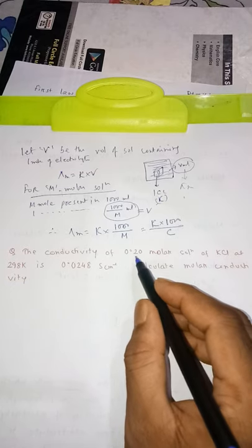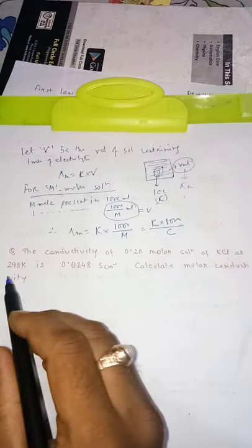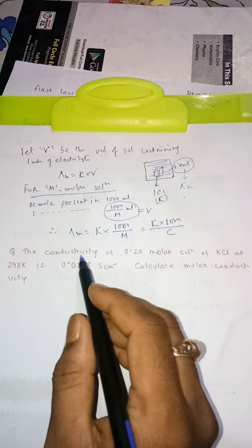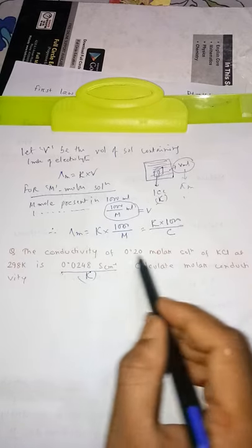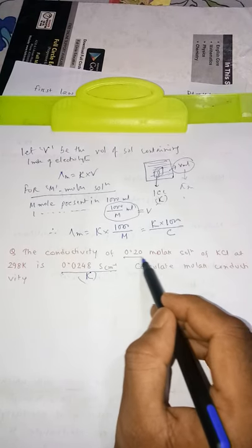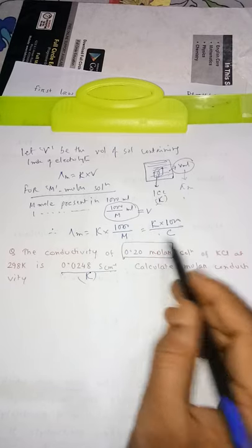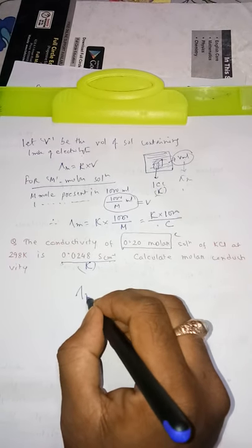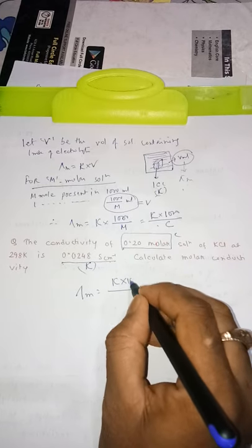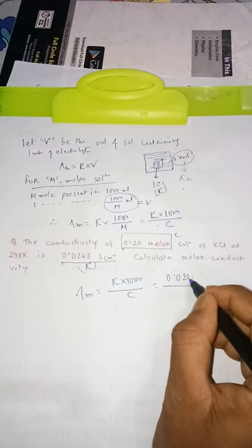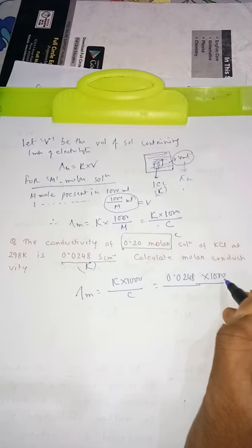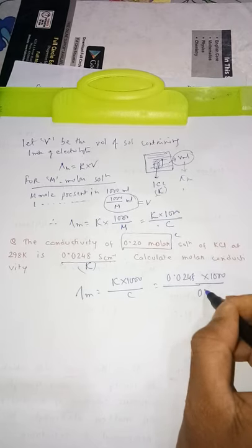Now we solve one problem. The question we have: the conductivity of a 0.20 molar solution of KCl at 298 Kelvin is given. If conductivity only is mentioned, remember this is specific conductivity kappa. The conductivity is in siemen per meter inverse, and the molar solution concentration is c = 0.20. So from that you find molar conductivity: lambda m equals kappa into 1000 by c. Kappa is 0.0248, into 1000 by c, which is 0.20.